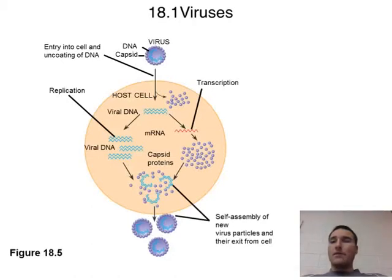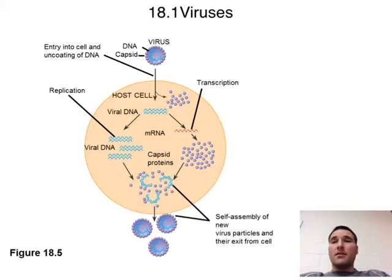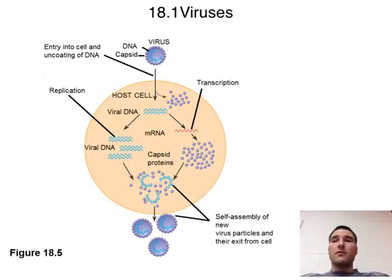And here we have it. This would be the basic overview of reproduction for a virus. There's a bunch of — what we will find out is — every single virus has a different mechanism for exactly how it goes through all the steps of making more of itself. But one thing they all have in common is these viruses need to have a host cell.